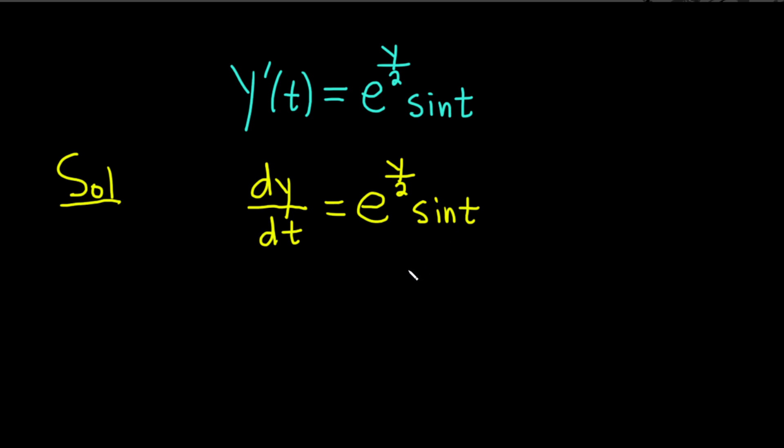And the goal is to separate everything. We want all of the y's on one side together with the dy and all of the t's on one side together with the dt. Looks like we can multiply by dt and divide by e to the y over 2. So when we do that we get dy over e to the y over 2.